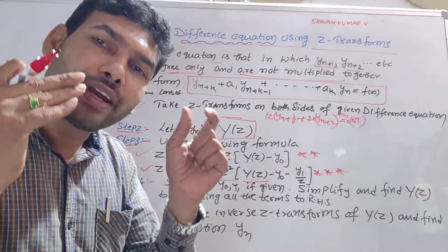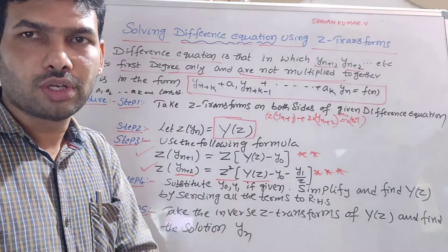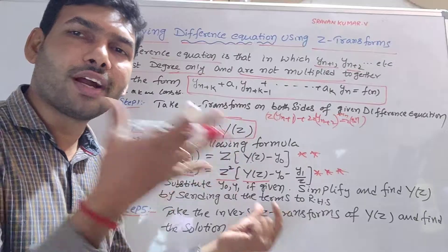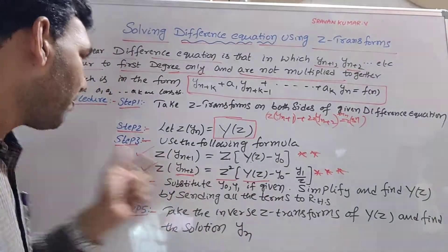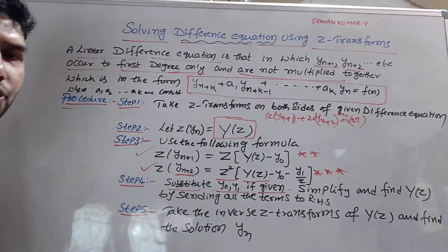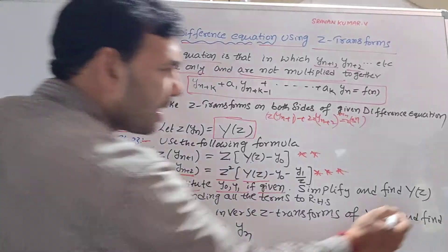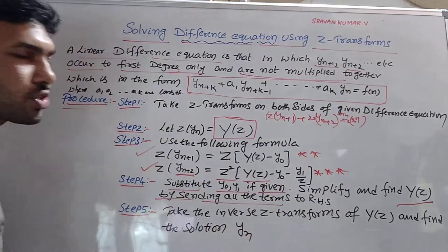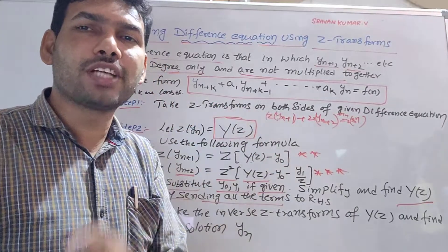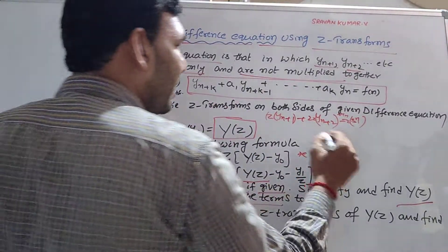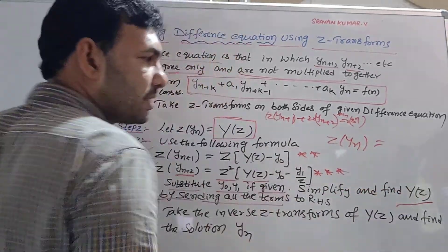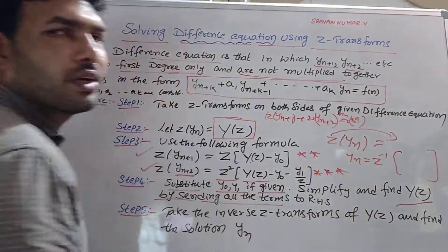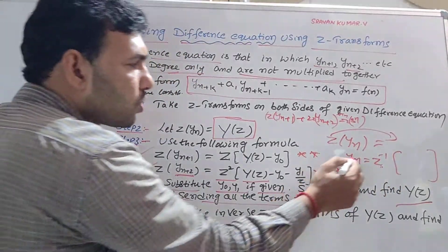So we substitute Y0 and Y1 values. Most of the time Y0 and Y1 are given in the question. After substituting, we split and rearrange. By sending all the terms to the RHS and keeping the capital Y(Z) on the LHS, we isolate capital Y(Z) to get the solution.